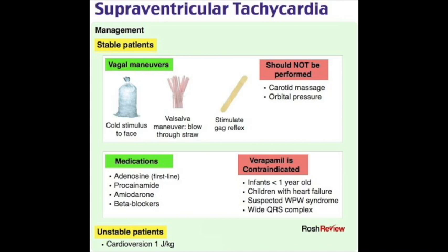SVT management: if stable, regular or narrow complex — vagal maneuvers first, then adenosine (first-line medical management). Second line: calcium channel blockers (diltiazem), beta blockers (metoprolol), or digoxin. If stable and wide complex — antiarrhythmics (amiodarone); procainamide if Wolff-Parkinson-White. Memory tip: narrow QRS = adenosine (shorter word); wide QRS = amiodarone (longer word). If unstable — direct synchronized cardioversion. Definitive: radiofrequency catheter ablation.